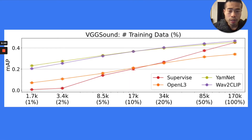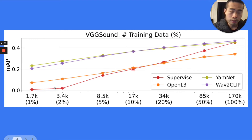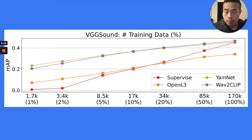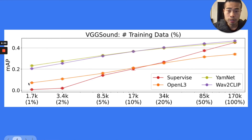Their generalization capability is very high. Looking at few-shot learning, if they only feed 1% of the data to the model, it still outperforms other unsupervised models by quite a lot, and the gap closes as more data is added. We care about few-shot learning capability because most of the time when working on a new task, you don't have enough data — for example, only 1% of the training data in the VGG Sound dataset.